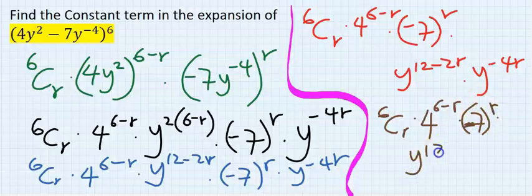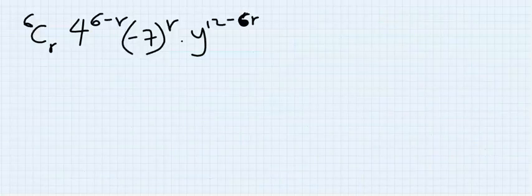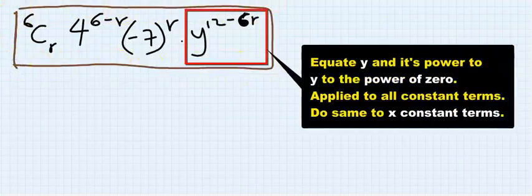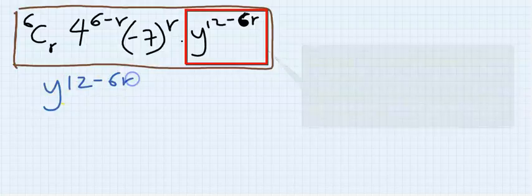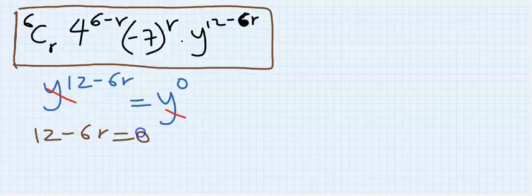Applying the law of indices, we get y to the power of (12 minus 6r). For a constant term, y is y to the power of zero, so we cancel the y terms. We set 12 minus 6r equal to zero, giving 12 equals 6r, and therefore r equals 2.